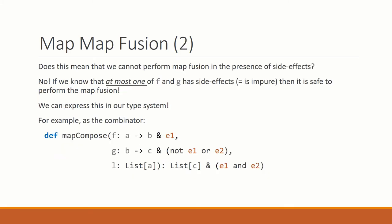However, using our type and effect system, we can rely on the following observation. If at most one of F and G has a side effect, in other words it's impure, then it's safe to actually perform the map fusion. So if both are pure, it's fine. Or if F is pure and G is impure, or vice versa, then it's okay.